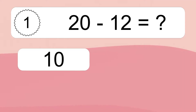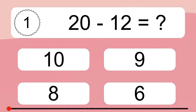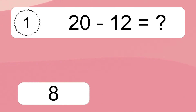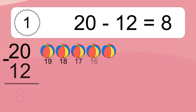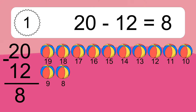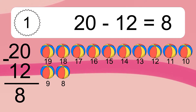20 minus 12 equals what? 20 minus 12 equals 8. Let's count it: 19, 18, 17, 16, 15, 14, 13, 12, 11, 10, 9, 8.